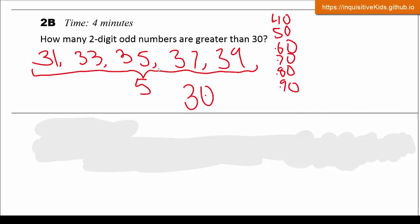And in every 10, there's 5 odd numbers. So 5 times 7 equals 35. So now we know that there are 35 odd numbers.